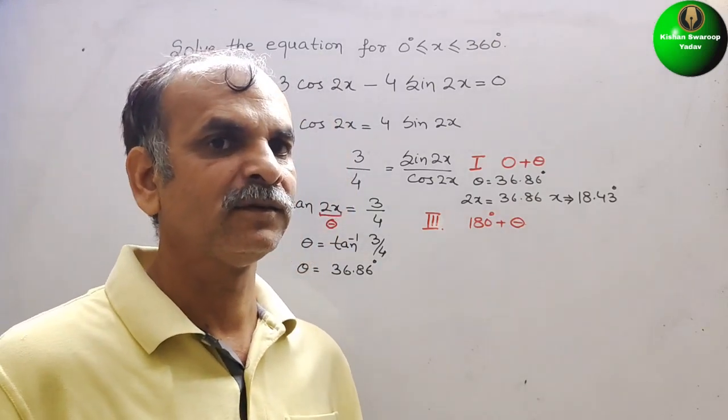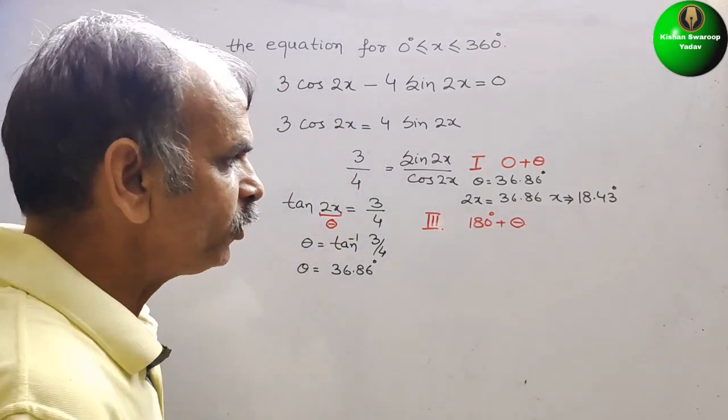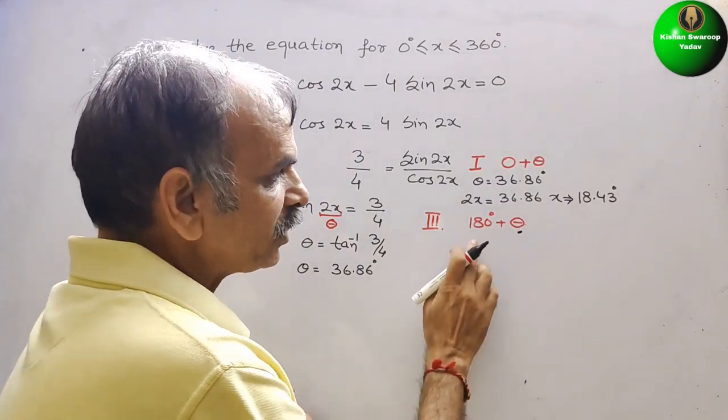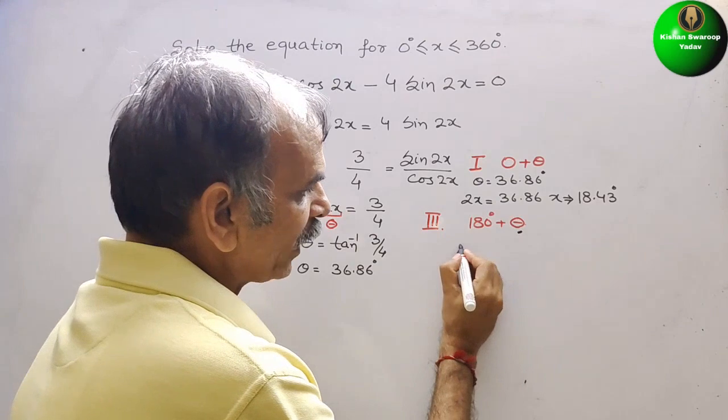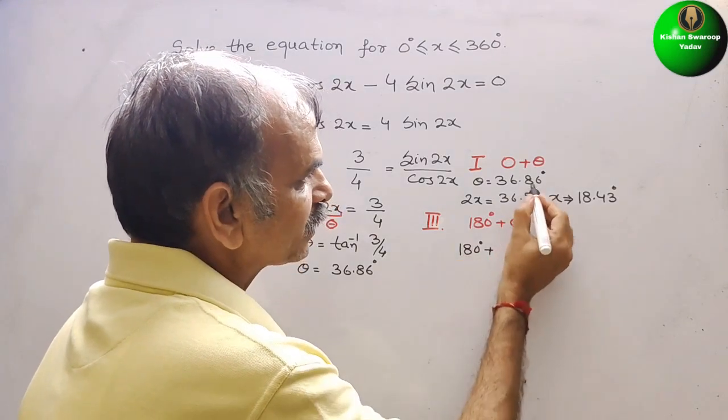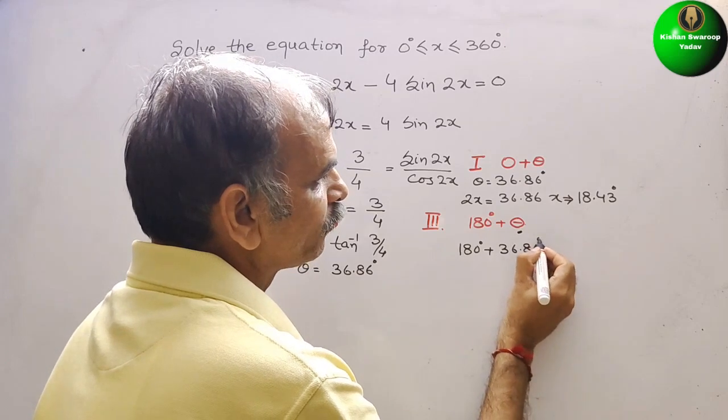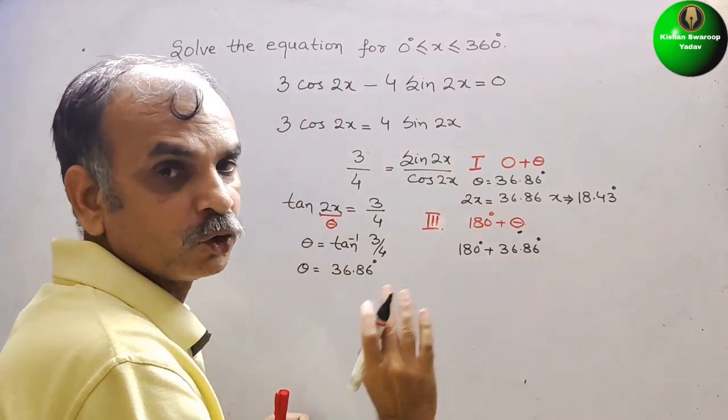Comes to second. What we have to do? 180 degree plus 36.86 degree, that we have to solve.